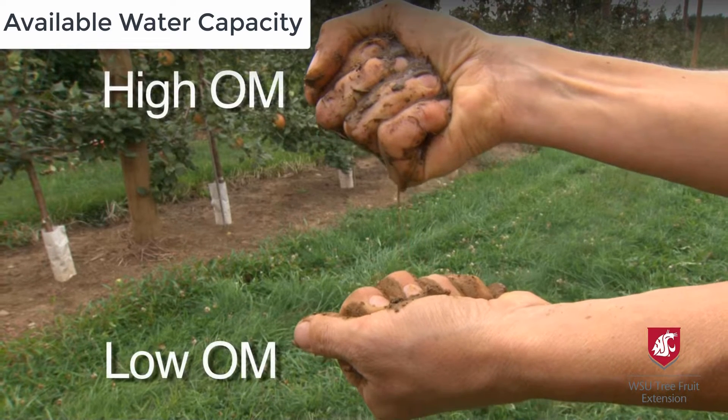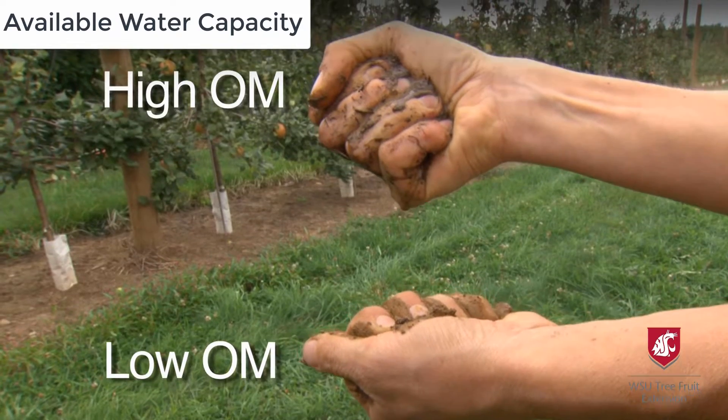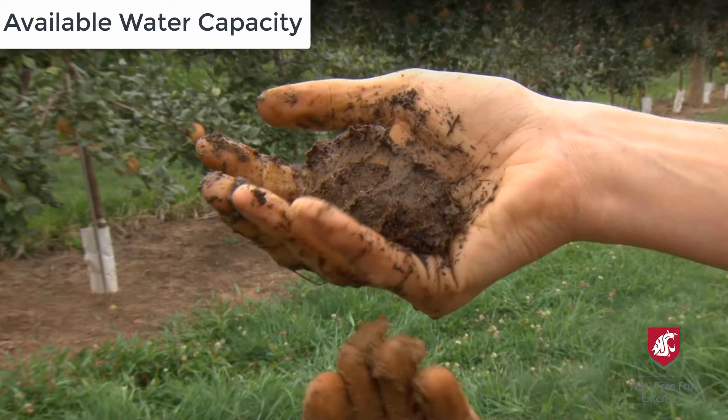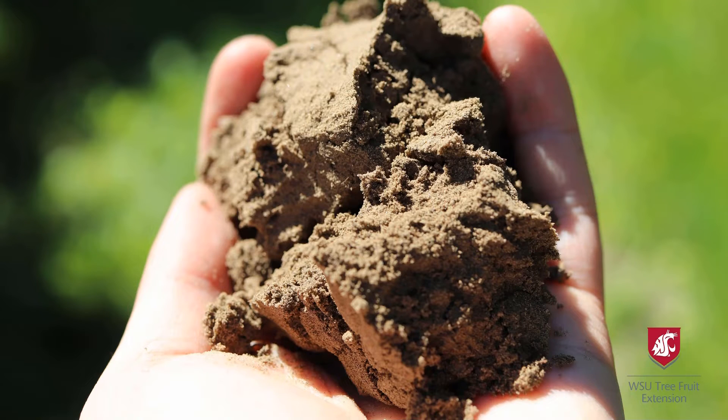Soils are a lot like sponges in the way they hold and release water. If a soil contains mostly large pores, like coarse sand, it loses water quickly through drainage.